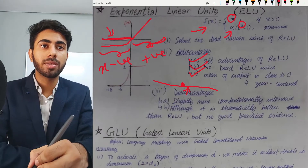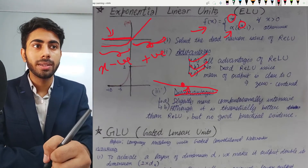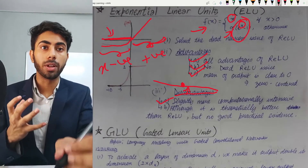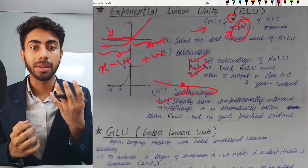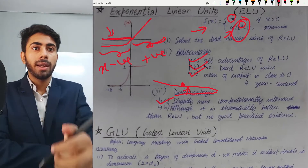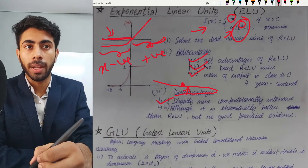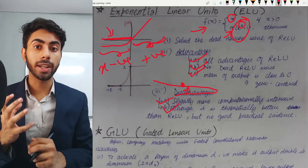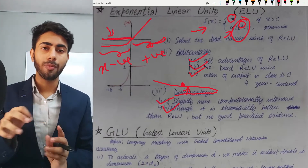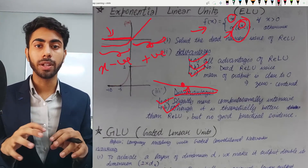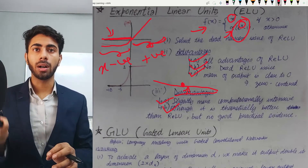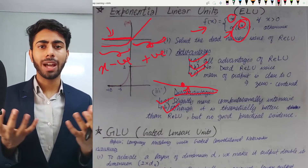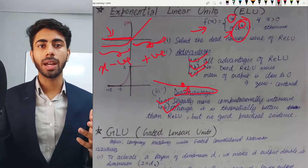The disadvantages of ELU are: first, since the formula involves an exponential term, it is computationally expensive — the time complexity is higher, so this activation function takes more time. Second, although ELU is theoretically better than ReLU, in practice during actual implementation, the accuracy of ReLU and ELU are found to be very similar, with not much difference between them.